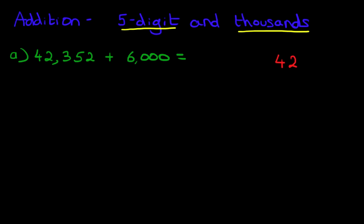Let's write the numbers down in columns: 42,352 plus 6,000 in nice, neat columns. That is the key to this. We are now ready to go ahead and do the addition.